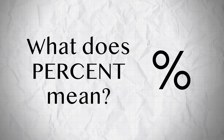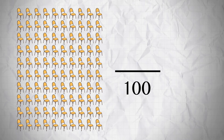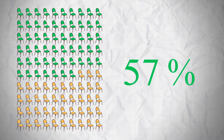What does percent mean? Percent means out of 100, or for every 100. For example, if there are 100 chairs and 57 of them are green, then 57% of those chairs are green.